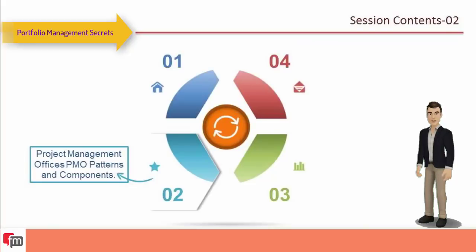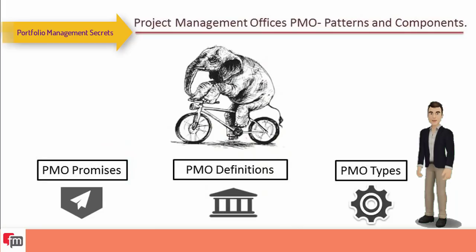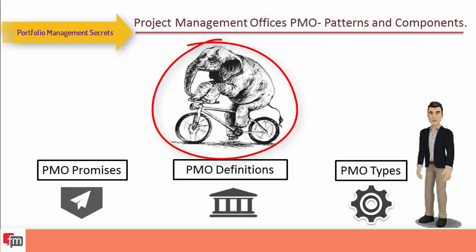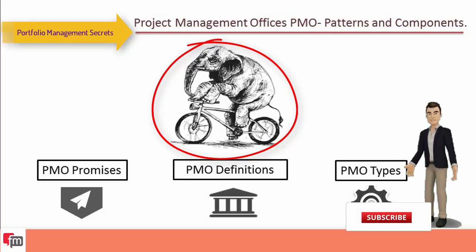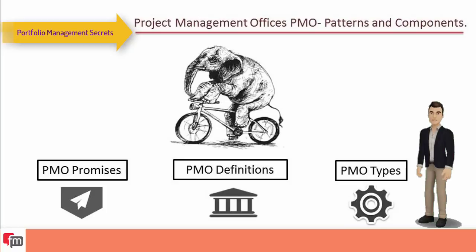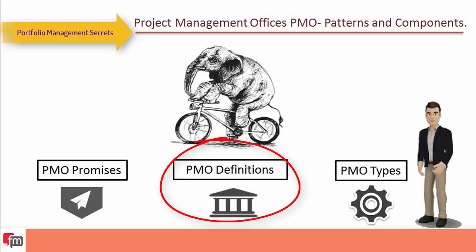The second part of the session covers project management offices — PMO patterns and components. A PMO is a structure formed by an organization to promote and improve project management through adaptive capacity assessment. It aims to minimize risk conflicts and achieve satisfactory levels of efficiency and effectiveness. The structure has been associated with better success rates in project management, including delivering projects on time, within scope, and on budget — per PMI 2013 definition.